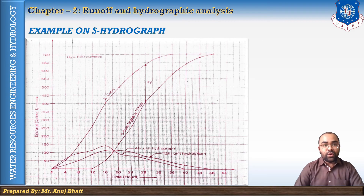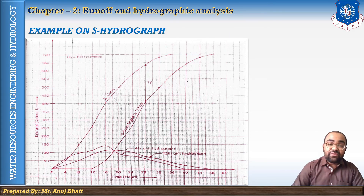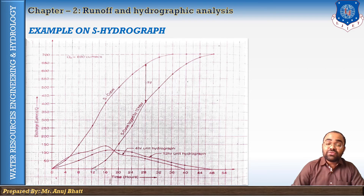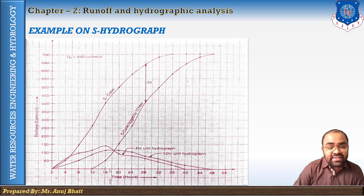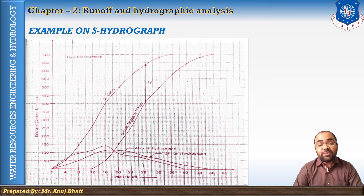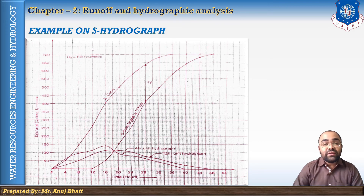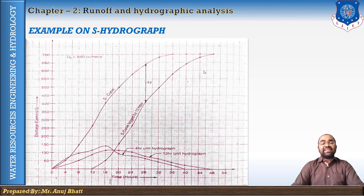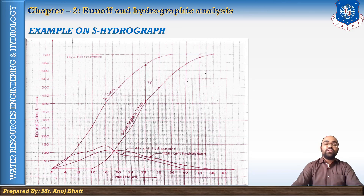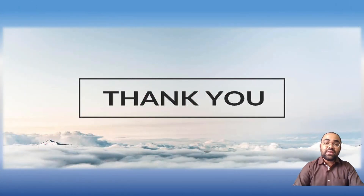On the graph, starting from zero we have the S-hydrograph ordinates for the 4-hour unit hydrograph, and starting from 12 hours we have the S-hydrograph for the 12-hour unit hydrograph. At the bottom both unit hydrographs are plotted, with the peak discharge Q-max equal to 690. This was the example of the S-hydrograph or S-curve method. I hope students you understand this topic thoroughly — thank you for your attention and I will see you in the next lecture.